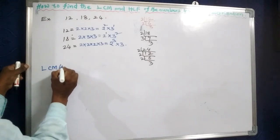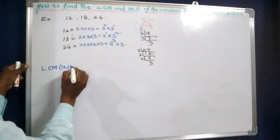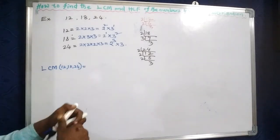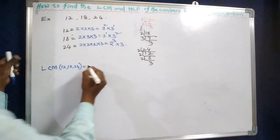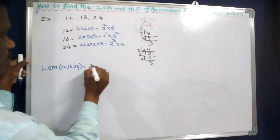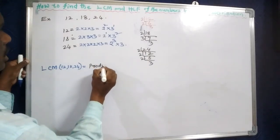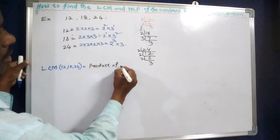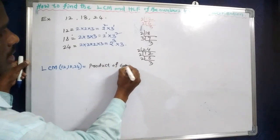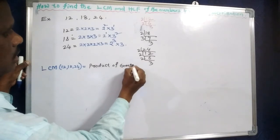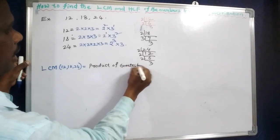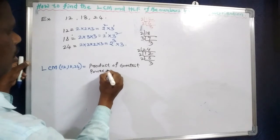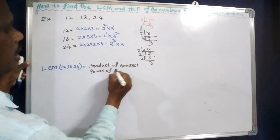Now, LCM of 12, 18, and 24 is the product of the greatest power of each prime factor.